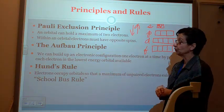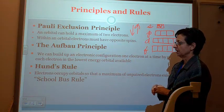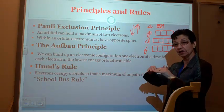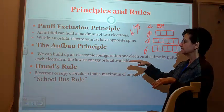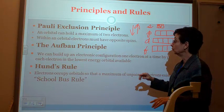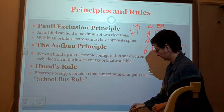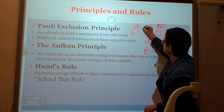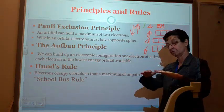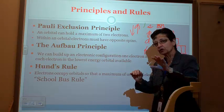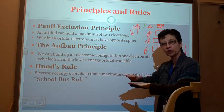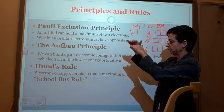The next rule is the Aufbau Principle. We build up - Aufbau is German, it means building up. We build up the electronic configuration starting at the bottom. We always have to start with the first energy level, so we build up. We go 1, 2, 3, 4, 5. Unfortunately, they don't always go in that order, but don't worry about that now. We just have to start with number one level, 2, 3, 4.